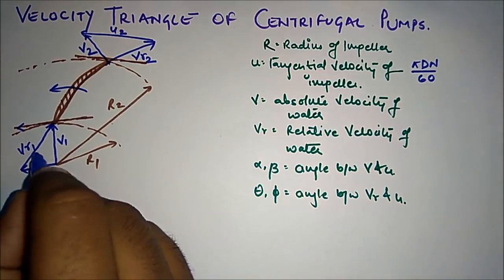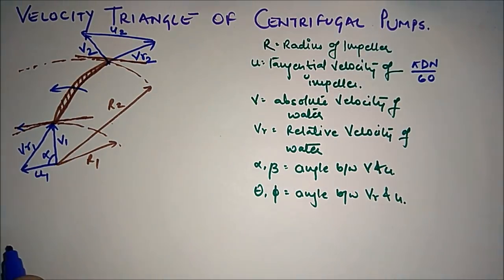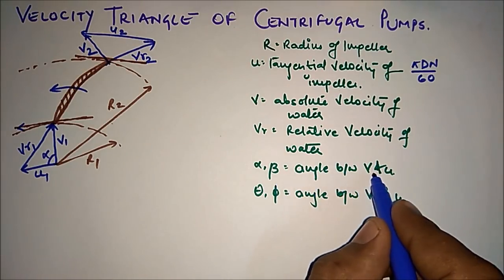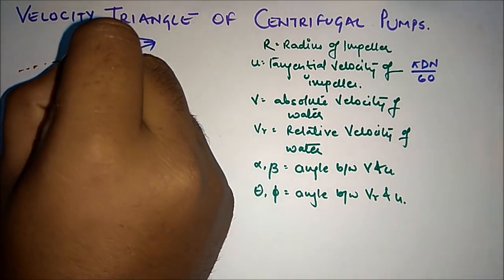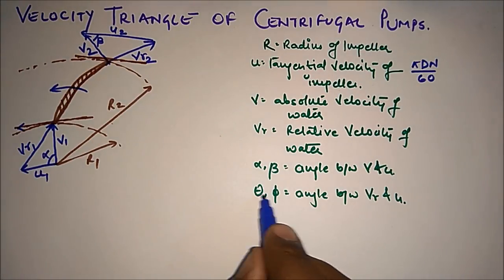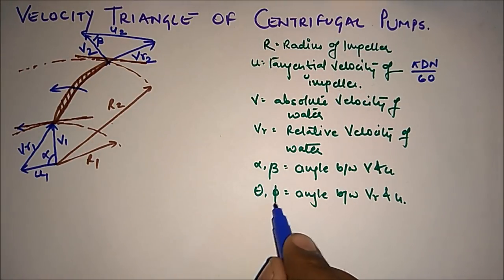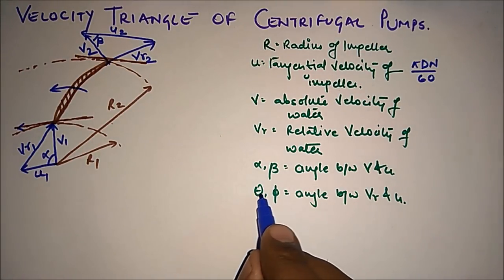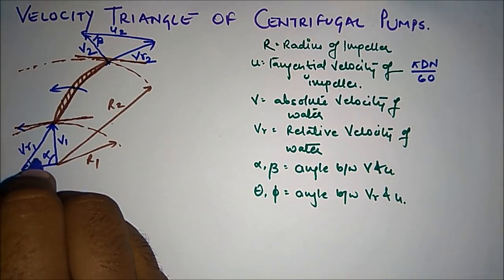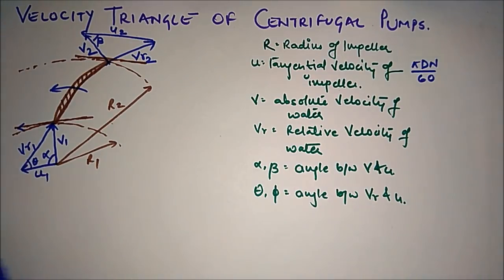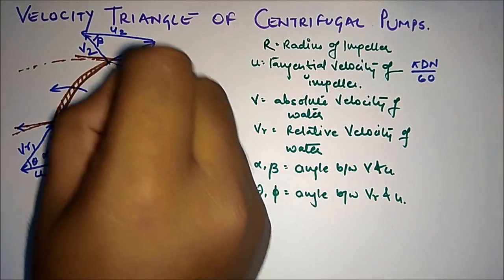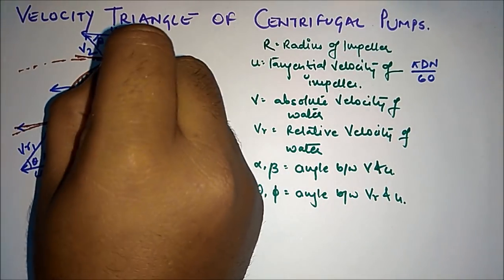At inlet, the angle between V and U is alpha. At outlet, the angle between V and U is beta. Theta is the inlet angle between Vr and U, and phi is the outlet angle between Vr and U.